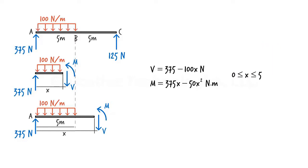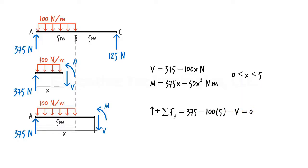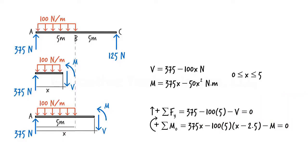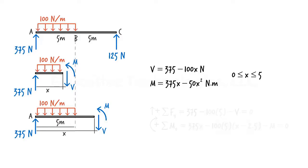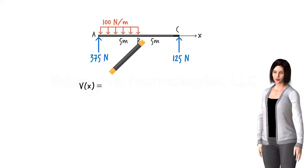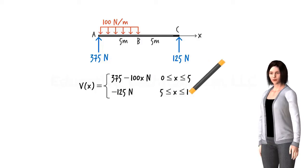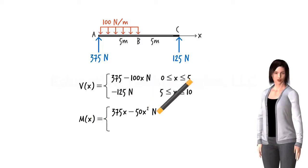For the second free body diagram, summing forces in the y-direction gives 375 − 100(5) − V = 0, and summing moments about the cut point gives 375x − 100(5)(x − 2.5) − M = 0. Solving: V = −125 and M = 1250 − 125x. In summary, shear in the beam is represented by V = 375 − 100x for the first segment and V = −125 for the second, while moment is given by M = 375x − 50x² and M = 1250 − 125x respectively.